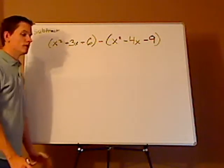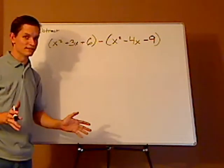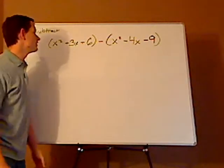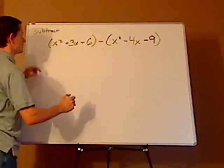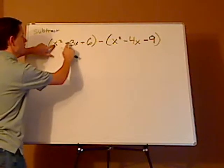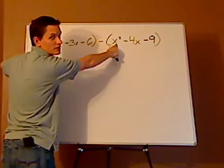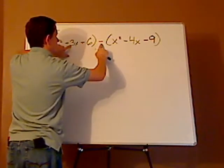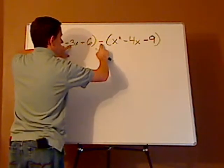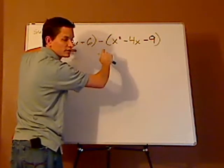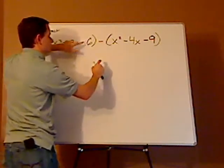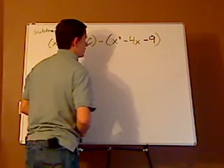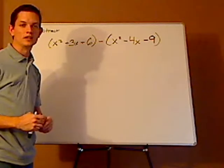Alright. Now, you can do it all in one step, which I don't recommend. And doing it in one step would mean that you take x² and you subtract x². You have 3x subtracted minus a negative 4x. And then you have 6 minus a negative 9. And that can be a little confusing.